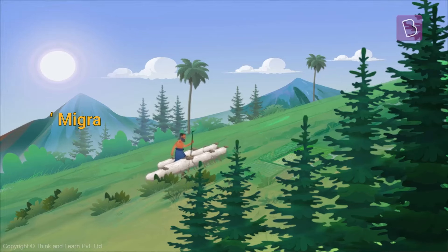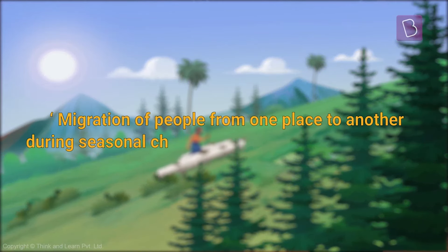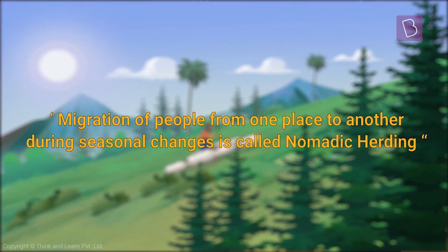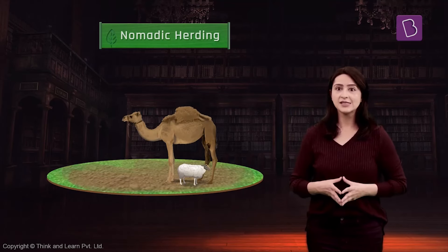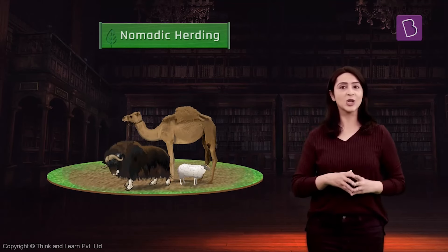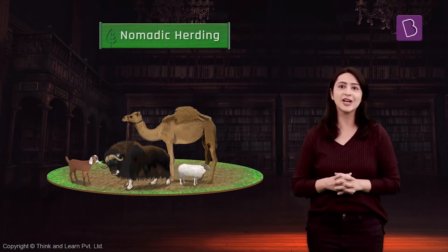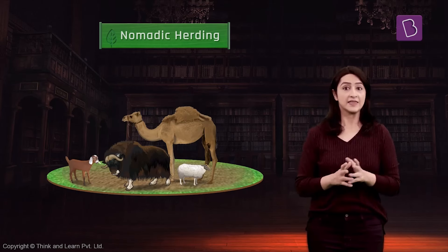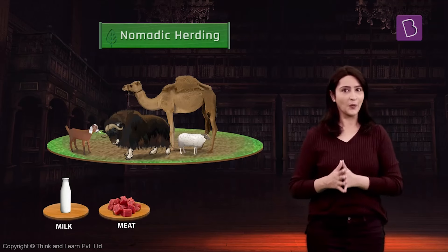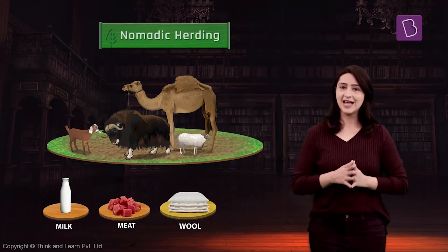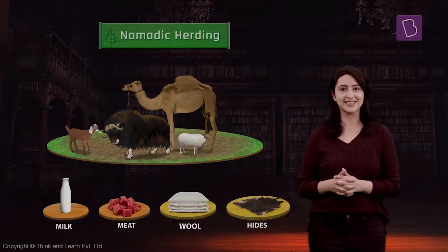This type of migration from one place to another is called nomadic herding. Sheep, camels, yak, and goats are the animals usually reared by nomads. They provide the nomads with milk, meat, wool, hides, and various other useful products.